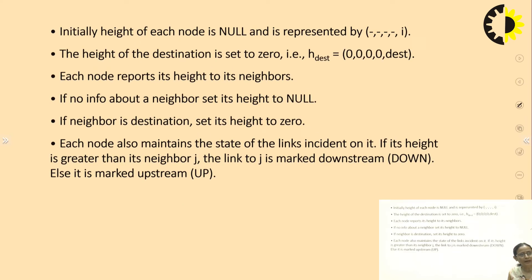Initially the height of each node is null and it is represented with this. Why we are not keeping it as null? Because the ID is associated with that node. This information is available. The height of the destination is generally set to 0, that is all the four parameters are set to 0. Each node reports its height to its neighbors. If no info about a neighbor, set its height to null. If the neighbor is destination, then set its height to 0.